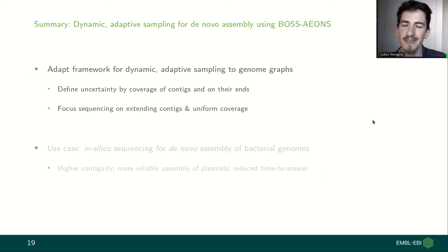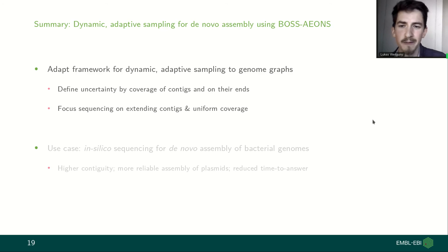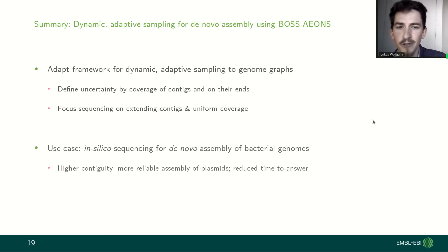To summarize, in the second part of the project we adapted the framework for dynamic adaptive sampling to genome graphs. We define uncertainty in a slightly different way and focus the sequencing on extending contigs and achieving uniform coverage across the assembly. Results from in silico sequencing demonstrate higher contiguity and more reliable assembly of plasmids for bacterial genomes, reducing time to answer.